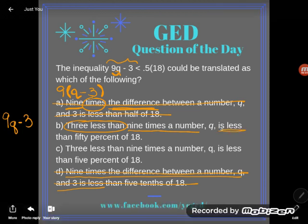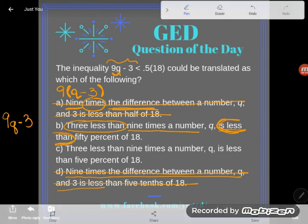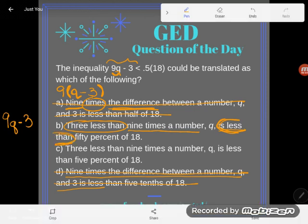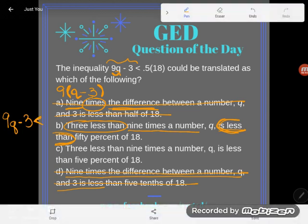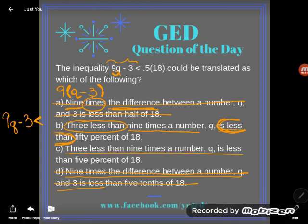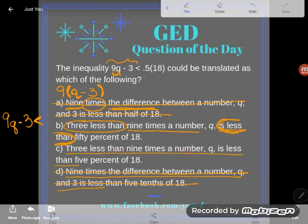I see the phrase 'is less than'—notice the 'is' with 'less than.' That verb tells me it's time for an inequality symbol, the strictly less-than symbol. (c) says the same thing: same beginning, 'three less than nine times a number q is less than.' So the first half of (b) and (c) are the same. What's the only difference? (b) says it's less than 50 percent of 18, and (c) says five percent of 18.